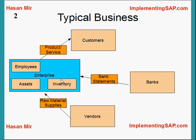Other than that, a company would have a bank account, and the bank would be sending bank statements monthly or periodically. So a company would be managing customers, vendors, employees, assets, inventory, and bank. This is just an example of a typical business — a company might be managing other entities as well.